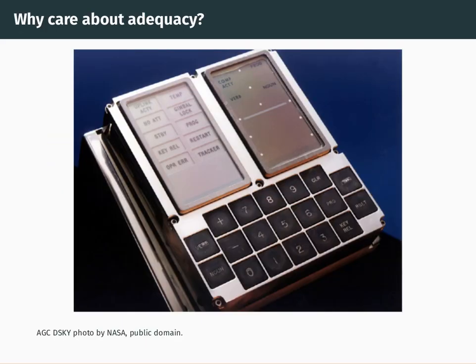So why might you care about adequacy? There are a couple of reasons. One reason is that adequate sets of connectives like {NOT, OR} or {NOT, AND} allow you to express any well-formed formula in a standard form. The particular standard forms arising from thinking about {NOT, OR} or {NOT, AND} are called disjunctive and conjunctive normal form. We don't focus on those in this course, but they're quite useful, especially in computer science.